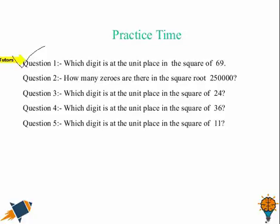Let's try question number 1. Which digit is at the unit place in the square of 69? We can see 9 is at the unit place and square of 9 is 81 where 1 is at the unit place. So here the answer is 1.